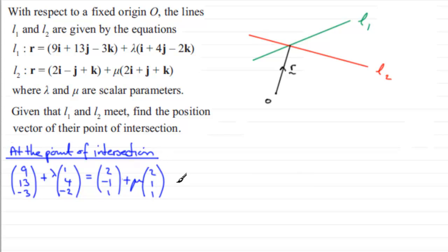Now at this point what we can do is we equate either the i components, j components, or k components. It's up to you. But what we look for is some easy equations that we can work with, because we're going to be doing simultaneous equations to work out what lambda and mu are going to be.